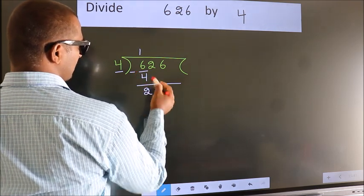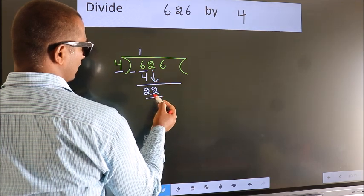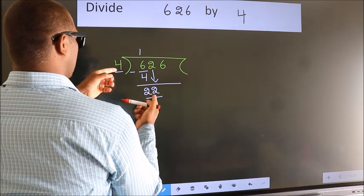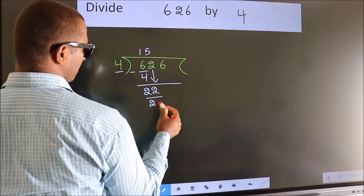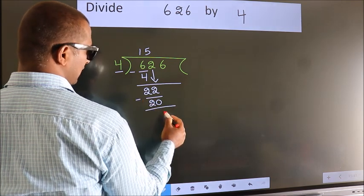After this, bring down the beside number. So, 2 down. So, 22. A number close to 22 in 4 table is 4 fives, 20. Now, we subtract. We get 2.